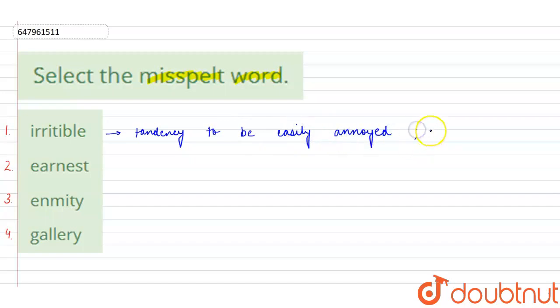And the spelling for this is irritable. It is I-R-R-I-T-A-B-L-E.